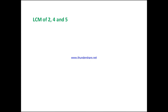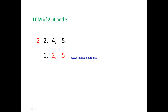Likewise, find the LCM of 2, 4, and 5 — we are finding the LCM of 3 numbers. Write the numbers in a single row: 2, 4, 5. We can take 2 as a suitable factor, and even 5 can be taken since one number is 5. But 3 cannot be taken — no number here is divisible by 3. Let's take 2. In 2, one time; in 4, 2 times; 5 cannot be divided by 2, so copy it down.